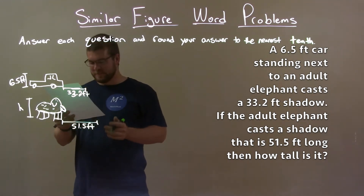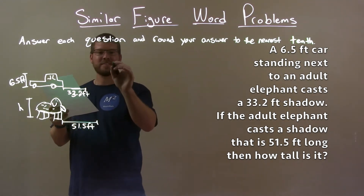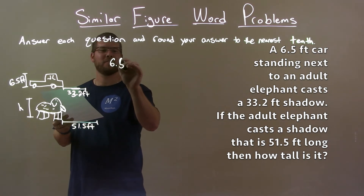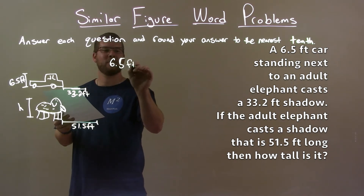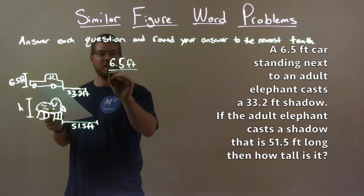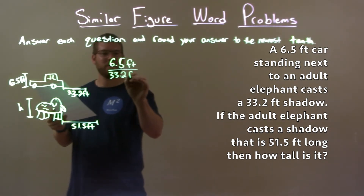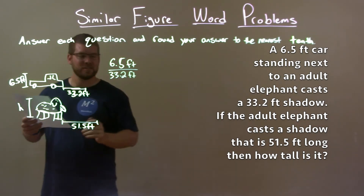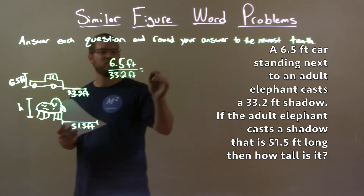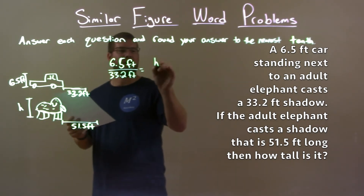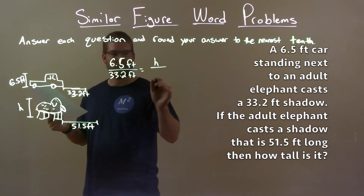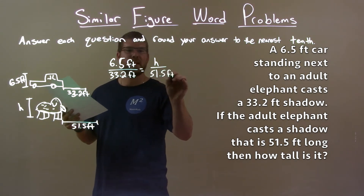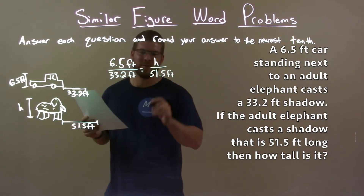Let's set up a proportion here. We have 6.5 feet over 33.2 feet — that's the height-to-shadow ratio for the car. It should be the same ratio as the height-to-shadow ratio for the elephant: H over 51.5 feet. Now let's solve for H.